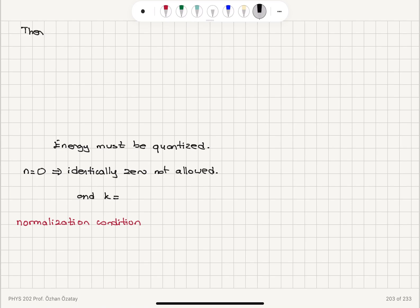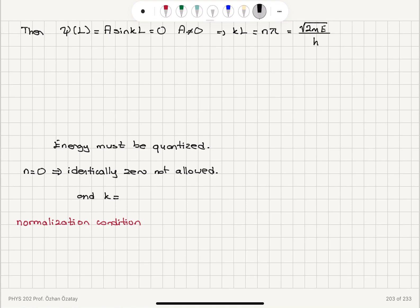The wave function must also vanish at the other boundary. ψ(L) = a sin(kL) should equal zero, and a is non-zero (if a were zero, ψ would be zero and the particle wouldn't exist). So sin(kL) = 0, meaning kL = nπ. Since k = √(2mE)/ħ, we get √(2mE)/ħ × L = nπ. This is the result of the second boundary condition.